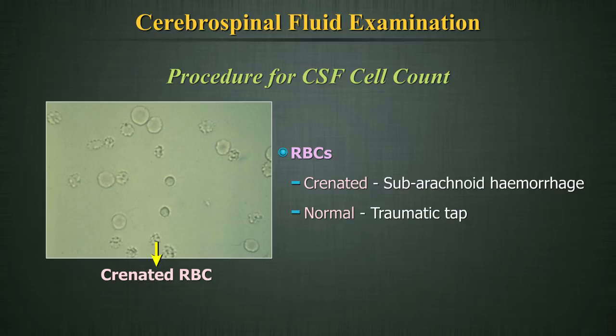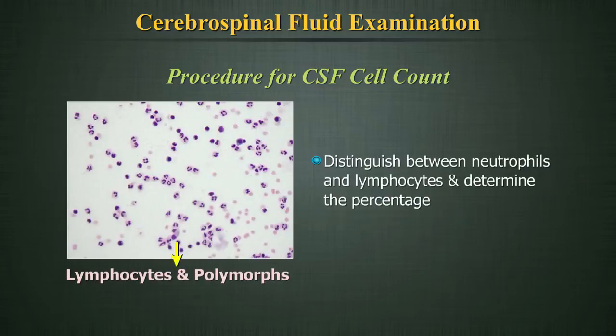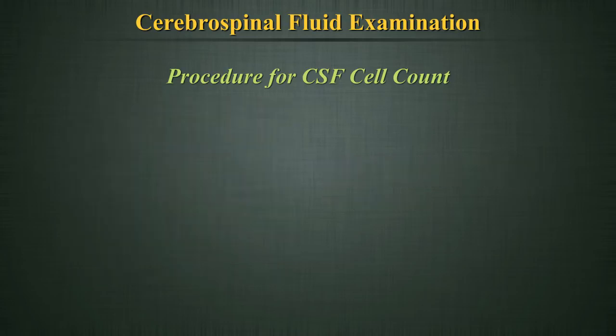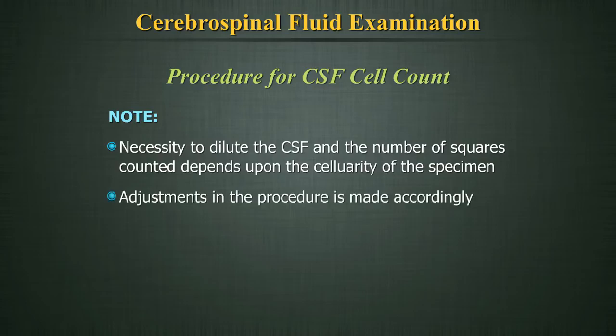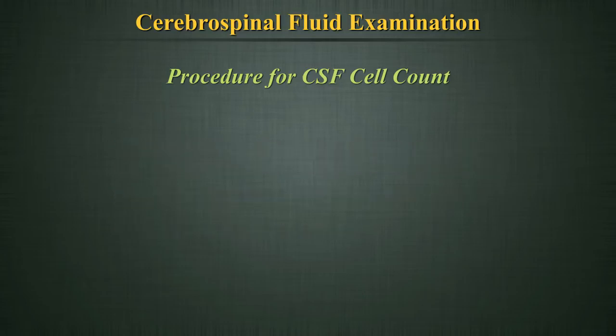It is also possible to distinguish between neutrophils and lymphocytes and determine the percentage of each type. Both WBCs and RBCs should be counted. Calculation: Cells per microlitre = N × 1 × 10 / 9.